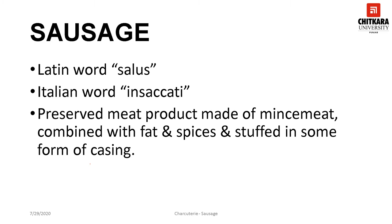From early times, people realized that many parts of animals such as intestine, stomach, and bladder were perfect pouches for meat to be placed inside and then cooked or cured to create sausages. Till now, the process of sausage making remains the same — the meat is first ground and then mixed with spices, seasoning, and curing agent. It is then stuffed into various casings and then cured, brined, smoked, or cooked. In Italy, sausages are known as 'insaccati,' which means 'in the sack.'